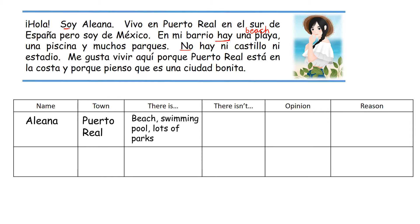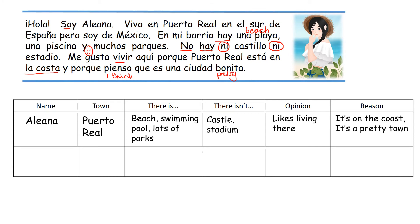For what there isn't: no hay ni castillo ni estadio — there is neither a castle nor a stadium. Her opinion: me gusta vivir aquí — I like living here — porque Puerto Real está en la costa, it's on the coast. Also, pienso que es una ciudad bonita — she thinks it's a pretty town.